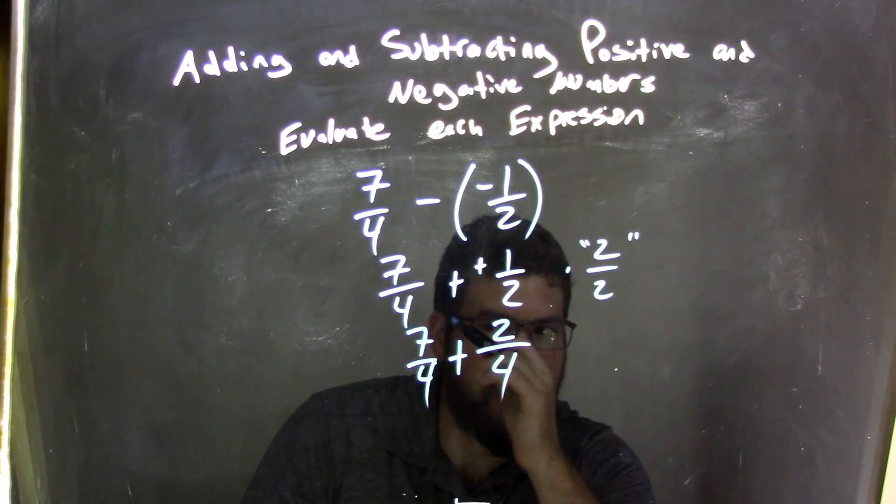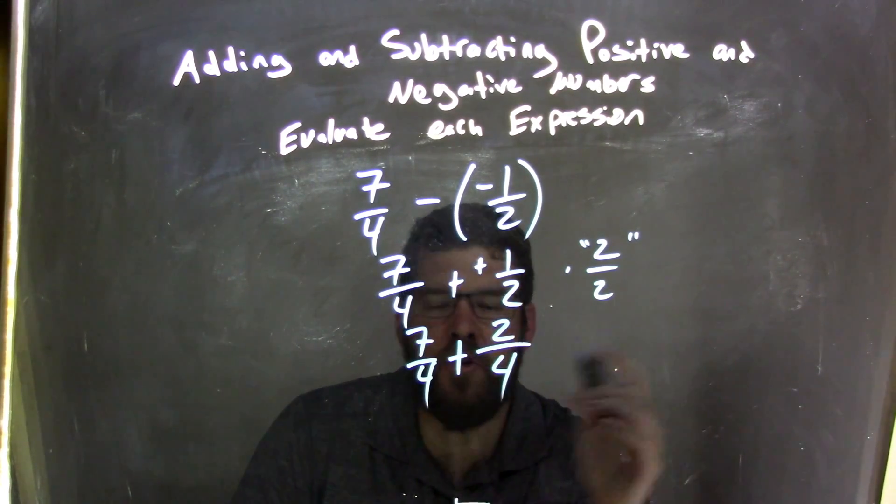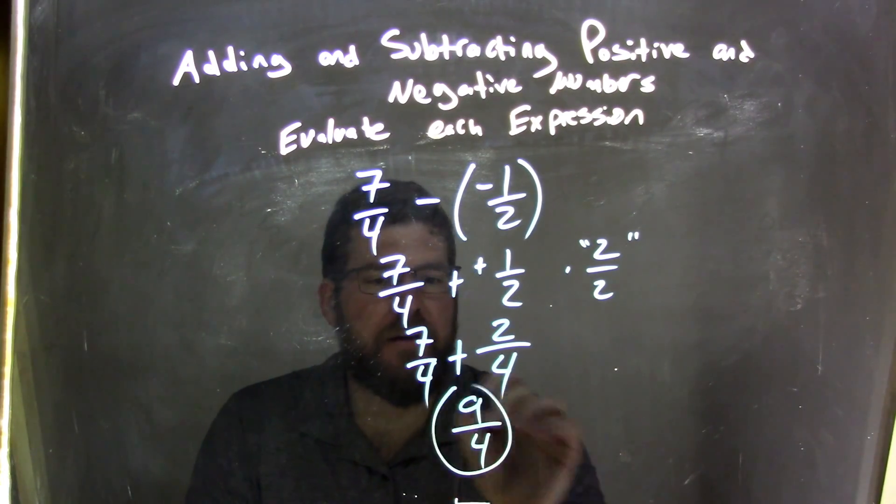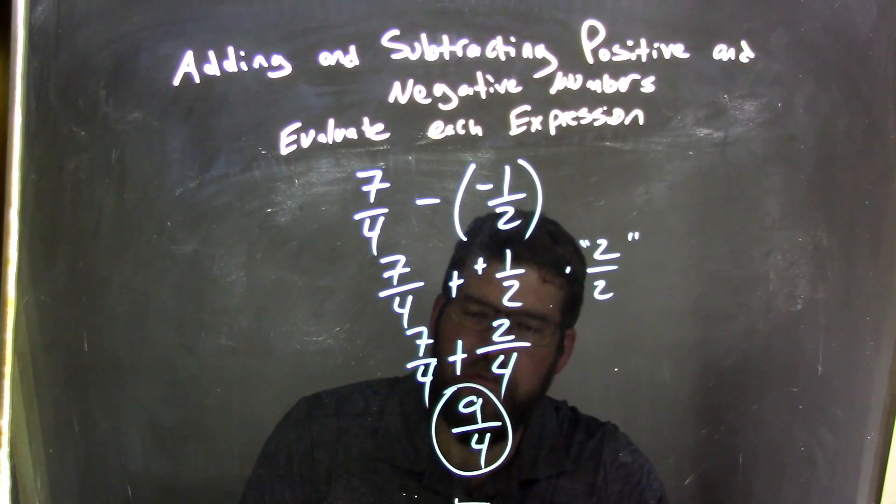So now we have 2 over 4, which is the same as 1 half, and we brought down the 7 over 4. So now that it's the same base, we just have to add the numerator, and the numerator is 9. So we have 9 fourths, keep the denominator the same, and that's our final answer, because 7 plus 2 is 9.